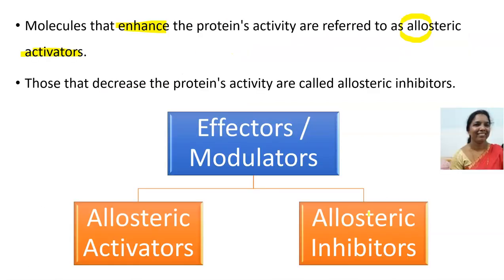Activators are molecules that enhance the protein's or enzyme's activity. Those effector molecules that decrease the protein's activity are known as allosteric inhibitors. So there are two terms: allosteric activators and allosteric inhibitors.